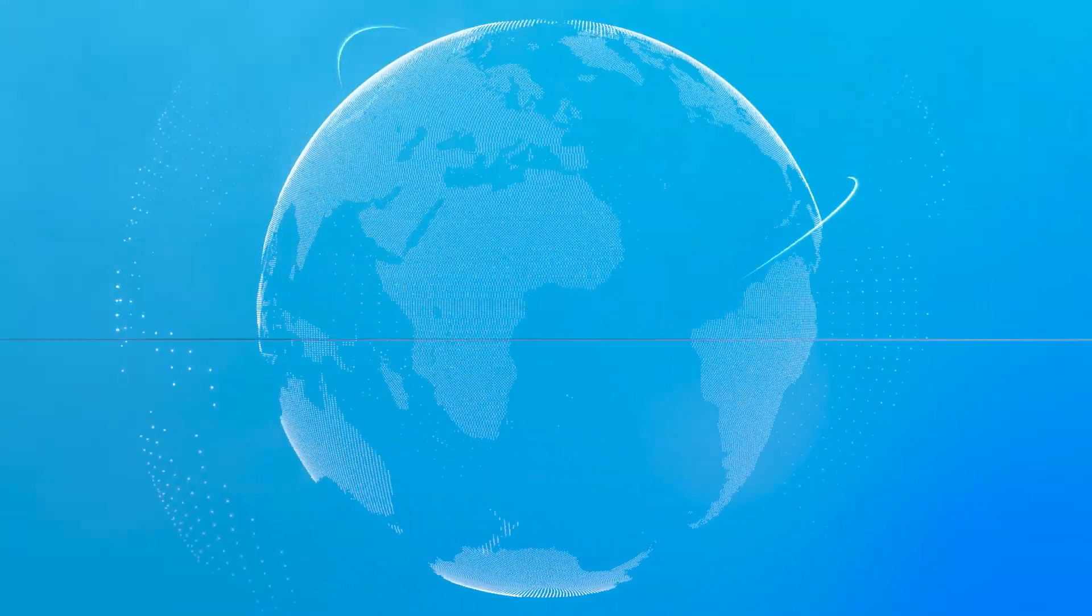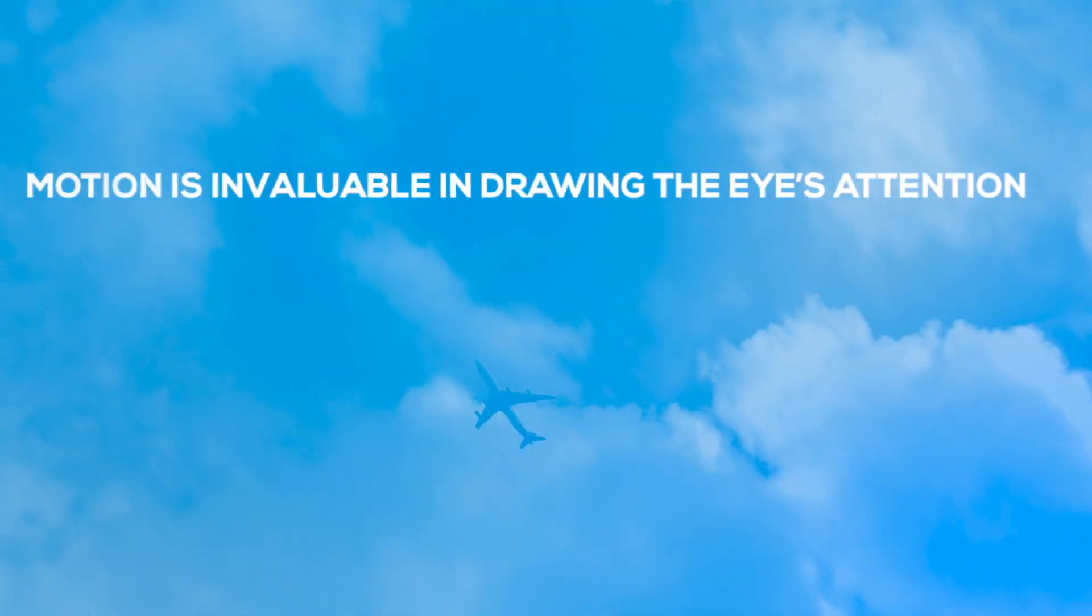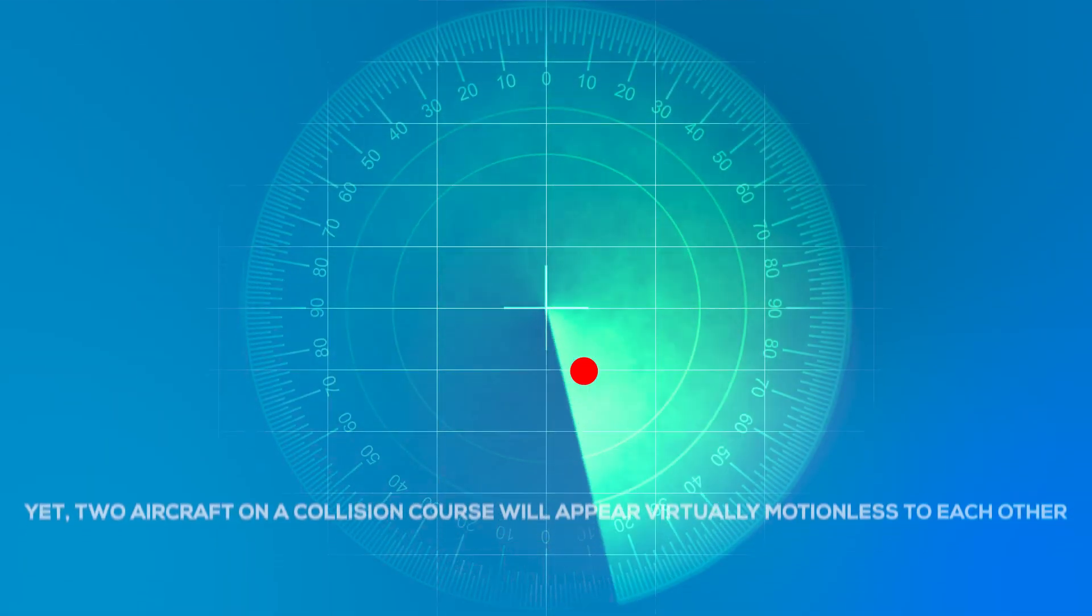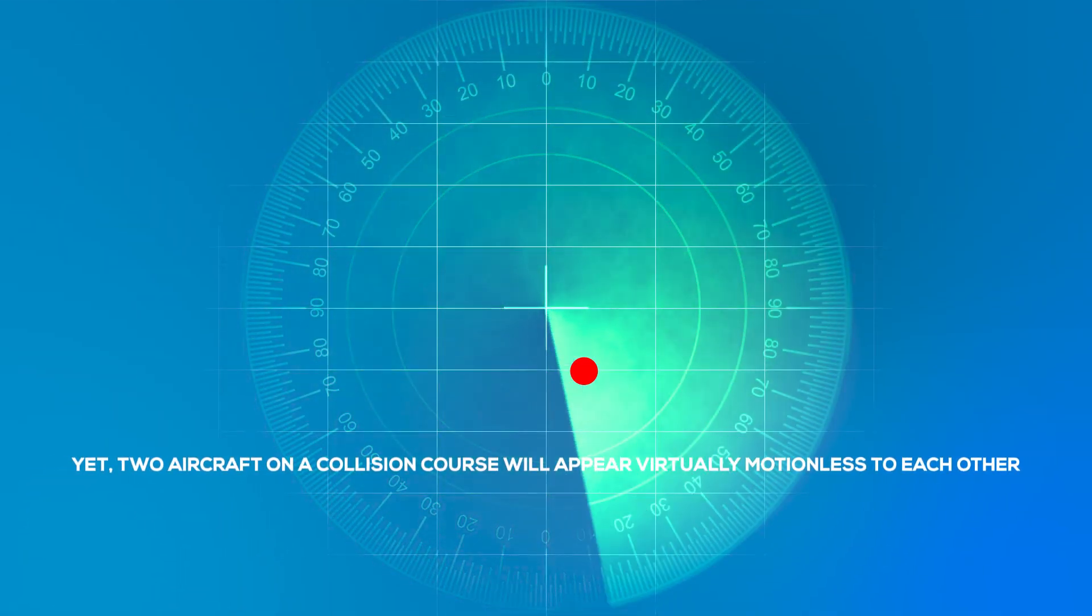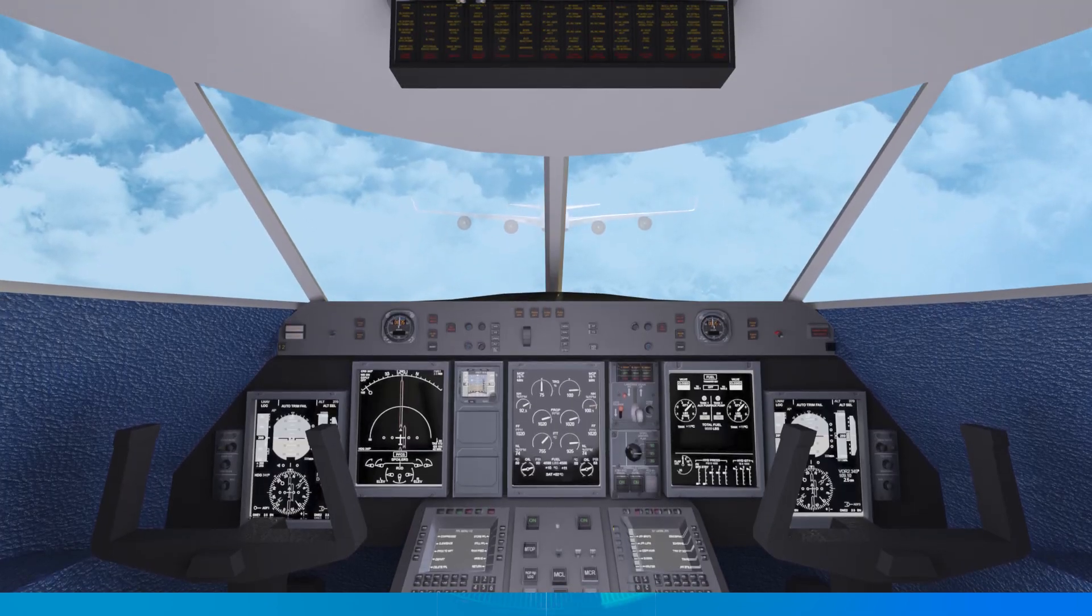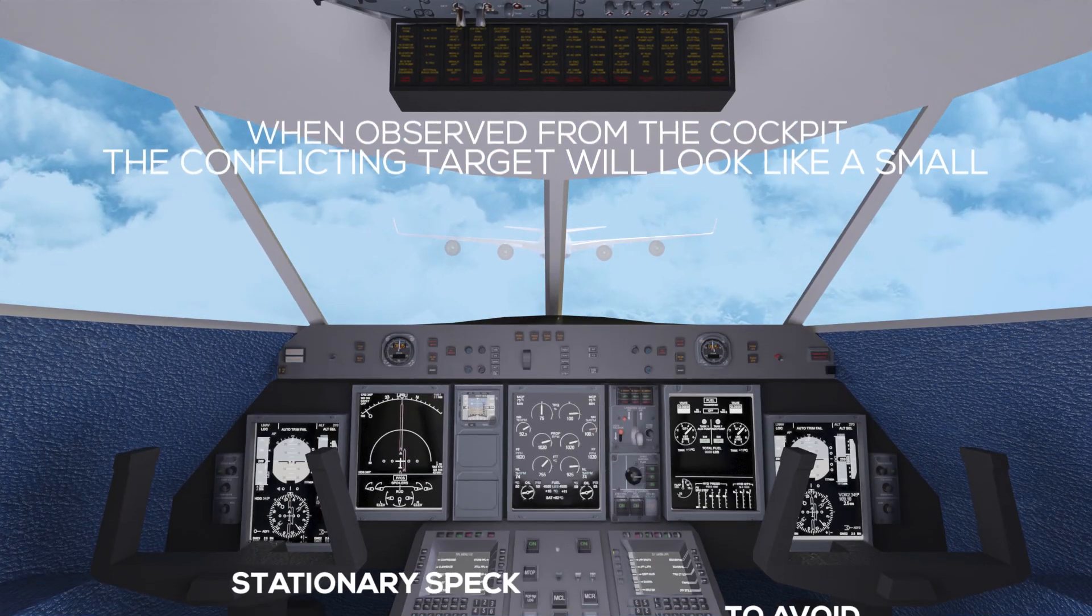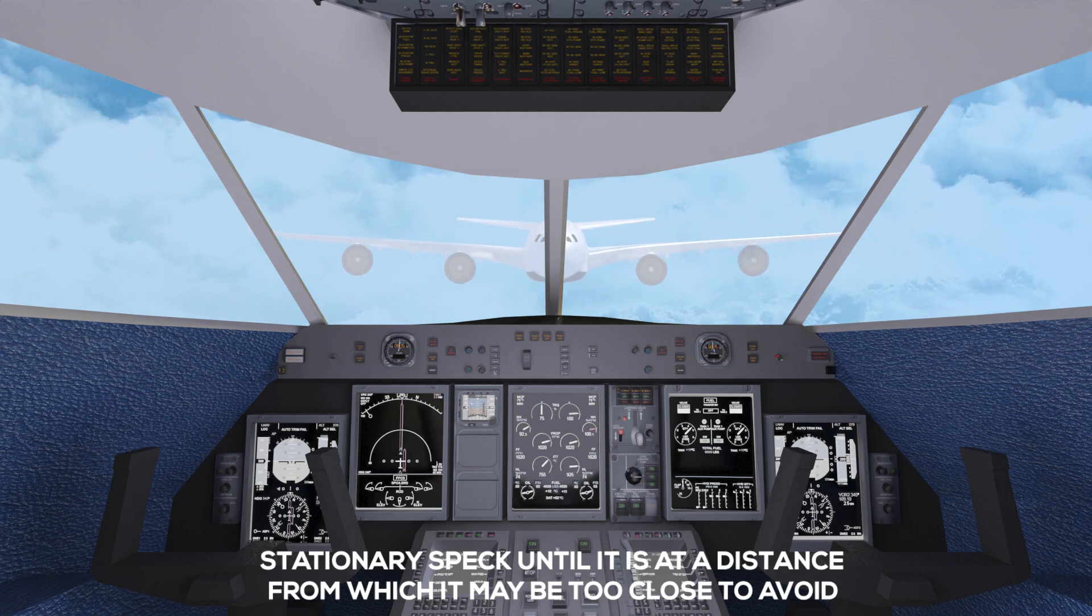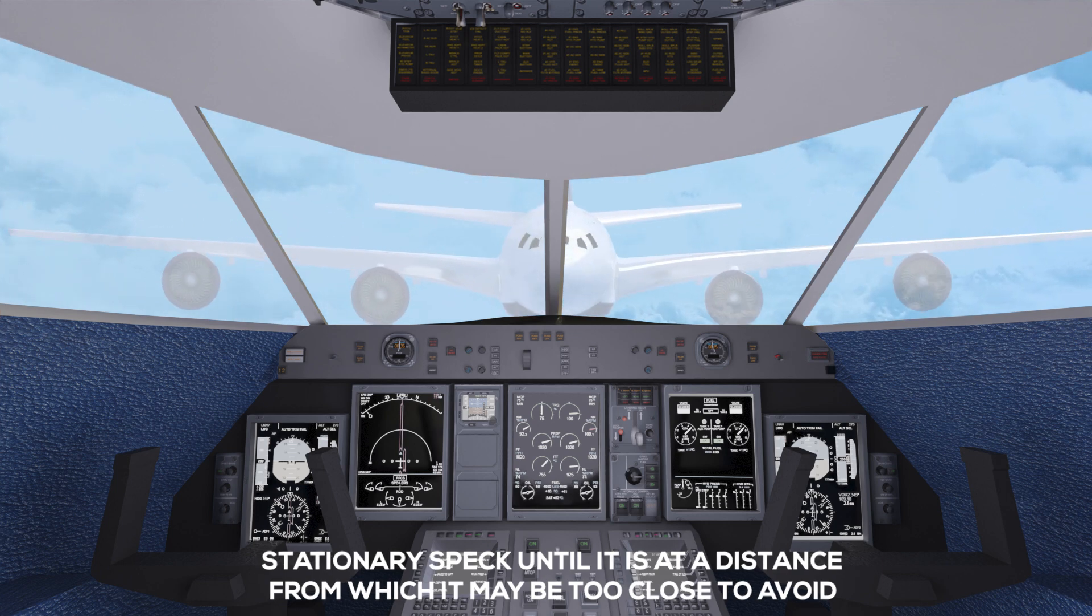Motion is invaluable in drawing the eye's attention, yet two aircraft on a collision course will appear virtually motionless to each other when observed from the cockpit. The conflicting target will look like a small stationary speck until it is at a distance from which it may be too close to avoid.